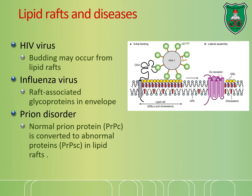Lipid rafts are also important in association with diseases. For example, the HIV virus buds out of the cell from lipid rafts, attaching to certain molecules there. Influenza virus also associates with glycoproteins in its envelope. Furthermore, prions—which can adopt an abnormal structure—undergo this conversion from normal to abnormal protein structure also in lipid rafts, demonstrating their functional and clinical importance.